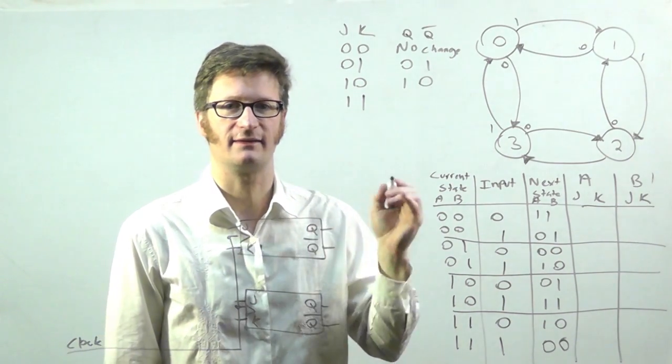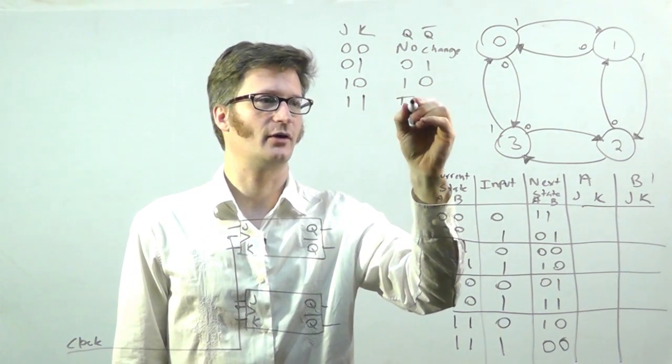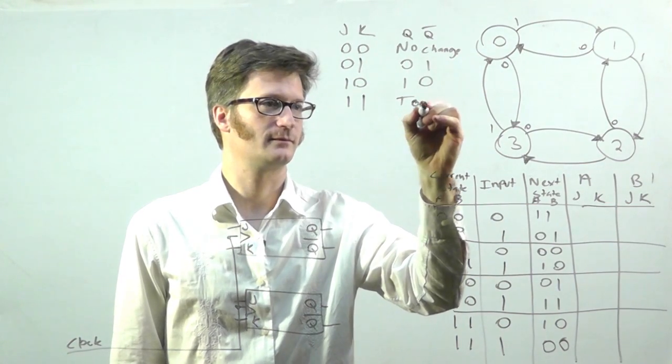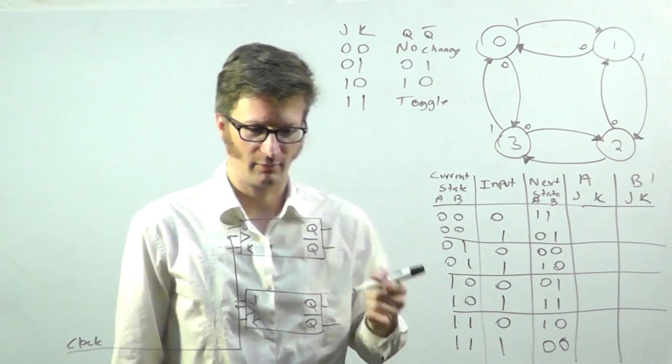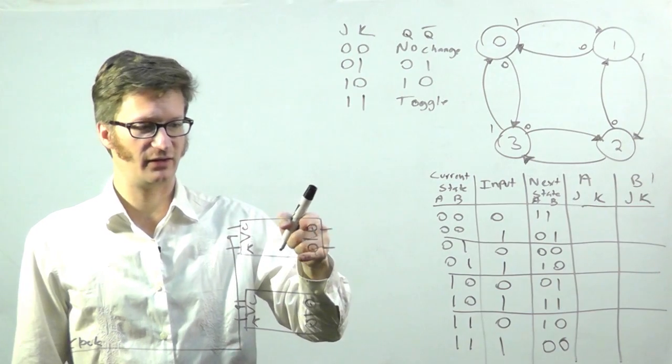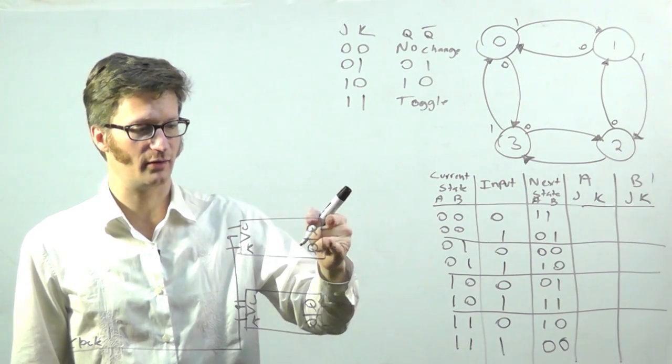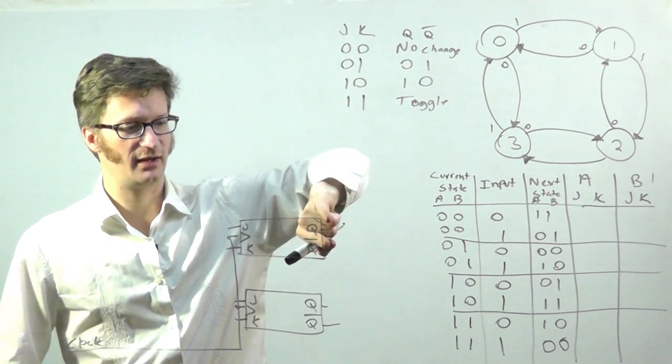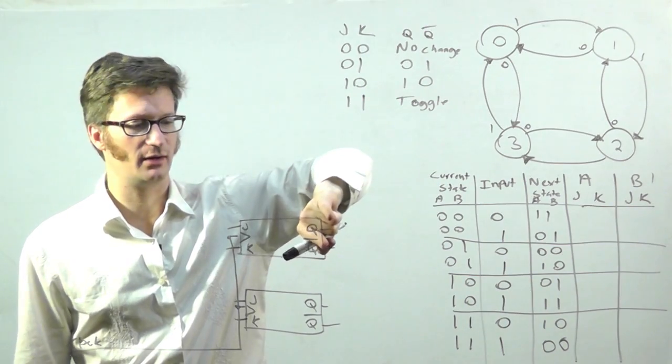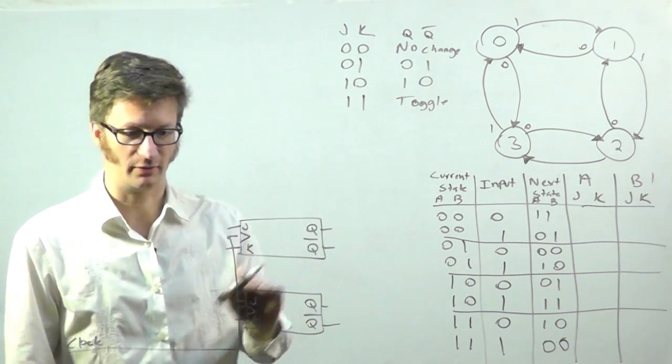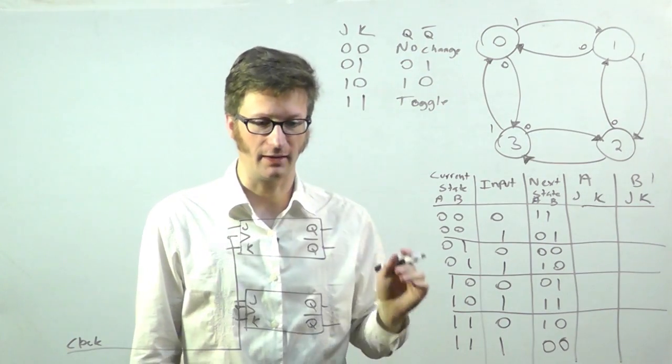Now if I have J and K both high, then what I end up getting is it toggles. So if Q is one and Q bar is zero, then Q becomes zero and Q bar becomes one when your clock pulse comes along.